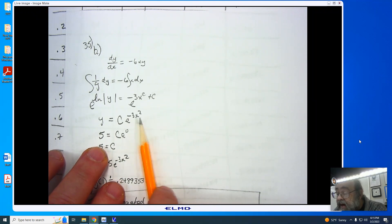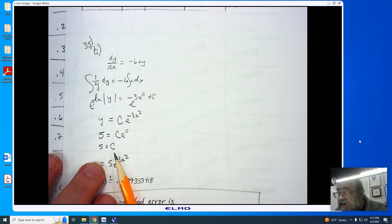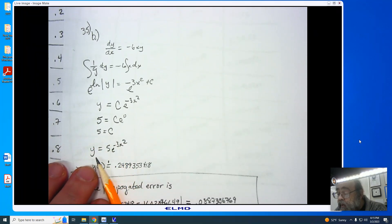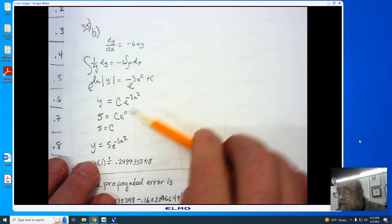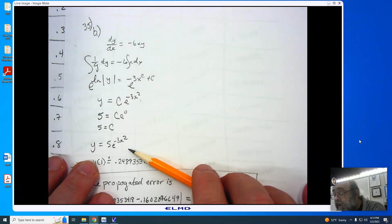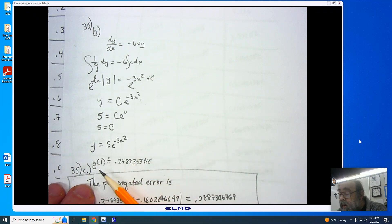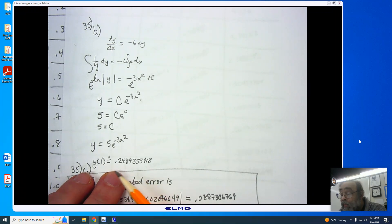We are now going to plug in the given point (0, 5). Since our x is 0, we end up with e to the 0, which is 1, leaving me with c, and the y is 5, therefore c is equal to 5. I now replace the c with 5 in the original problem, and I end up getting y equals 5e to the negative 3x squared power, allowing me to put in 1 and get approximately 0.2489353418.